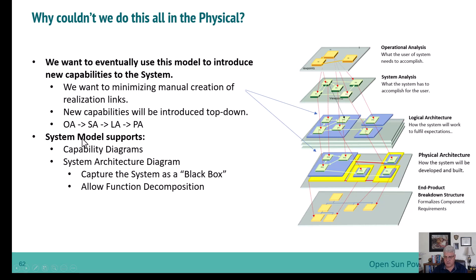The system model also supports some diagrams that are unique. It has a capability diagram that you don't have in the physical architecture, and it also has a system architecture diagram, which is more of a black box view of the system. That's a very nice feature because now you're defining what's in the system and what's not in it — a clean black box representation.